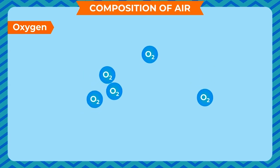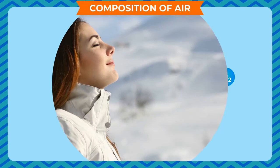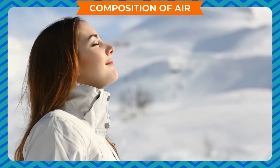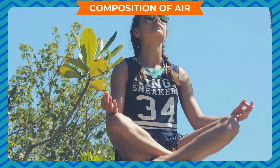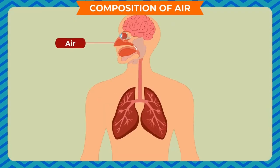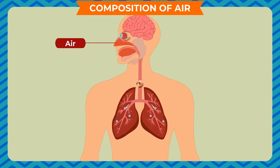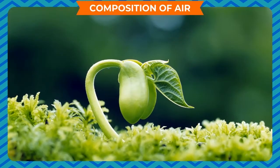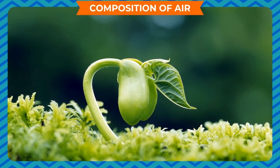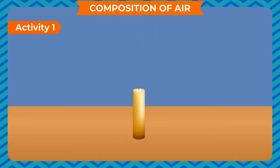Oxygen gas is one of the most essential components of air in the atmosphere. It covers nearly 21% of the air by volume. It is absorbed by living beings through the respiration system, which supports burning of food in human cells. Plants release oxygen into the surrounding during the photosynthesis process.